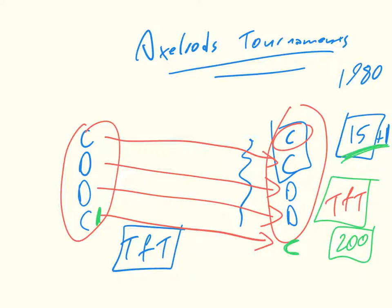In the literature, it's often said that tit-for-tat is the best strategy — but that's not actually true. This is a bit outside the scope of the course and is my own personal research interest, but tit-for-tat is good in a particular environment. There's some recent work that defines better strategies depending on the environment. So we're going to study a particular type of strategy for the iterated Prisoner's Dilemma.